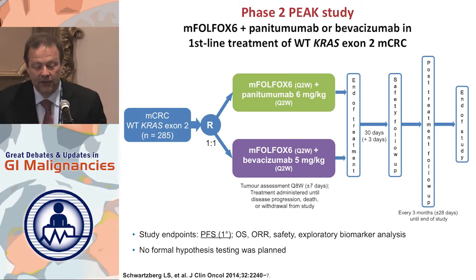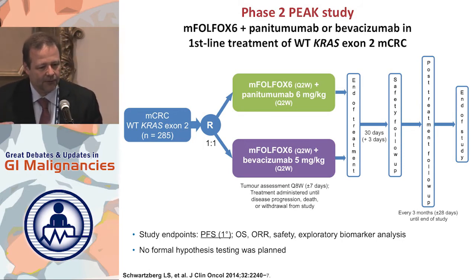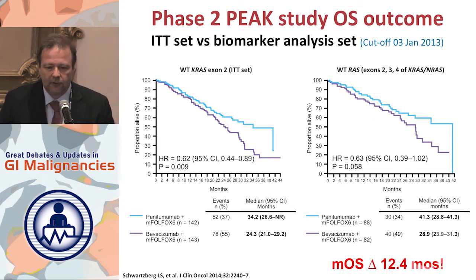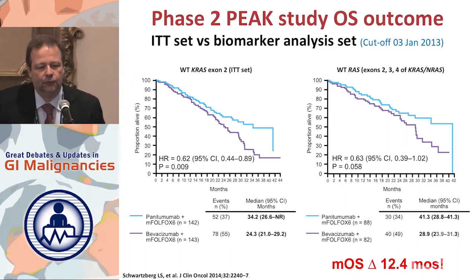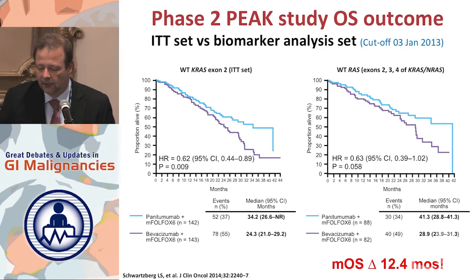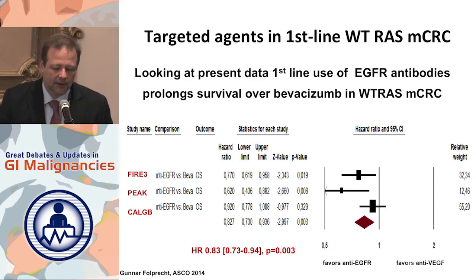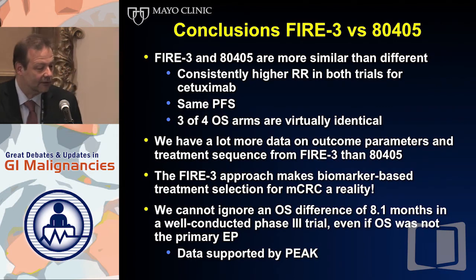CALGB/80405 and FIRE-3 are not the only data we have on first-line EGFR antibody therapy. We also have PEAK — a large randomized phase 2 study with panitumumab added to Folfox, the preferred first-line regimen of 80405. You can see here in the ITT versus the biomarker-selected population: the RAS wild-type tumors show the same trend as in FIRE-3, clearly in PFS but also strongly in overall survival. So we have a confirmatory trial for FIRE-3 in PEAK, albeit on a smaller scale. When you pool all three studies, as Gunnar Folprecht presented in a crude meta-analysis, EGFR antibodies show a survival benefit in first-line therapy even when you include 80405.